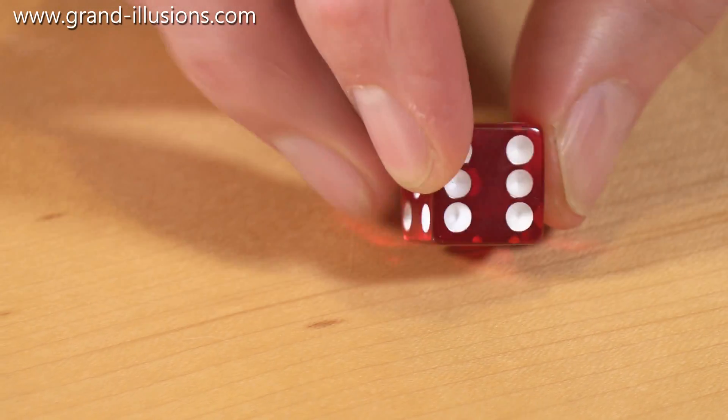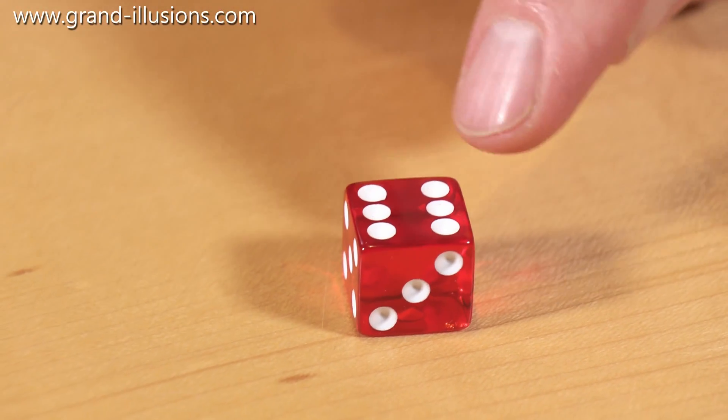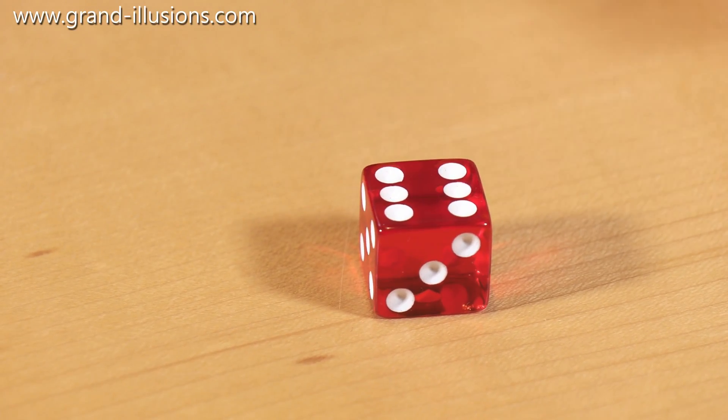Turn it over, and one is opposite of six. Hang on a second, those are all the same size as the ones, so there's six bits of material being taken from that side.